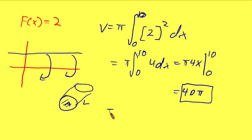The area of a circle is pi r squared. So, if our radius is 2, our area is going to equal 4 pi. And if you multiply it by 10 length, you get 40 pi. So, this checks out.